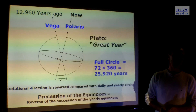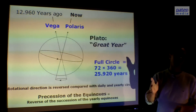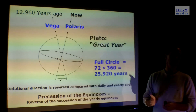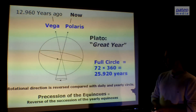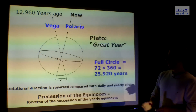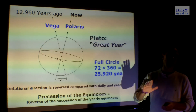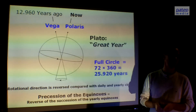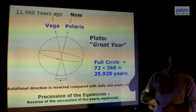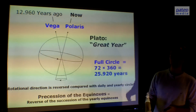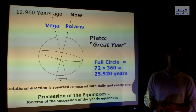Every 72 years this cycle advances one degree — that's how slow it goes. The direction of this cycle is opposite to the normal yearly cycle, and that's why it's called a precession. The normal one is a succession, but this is a precession — the precession of equinoxes.